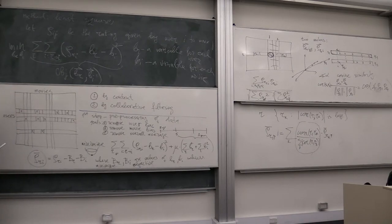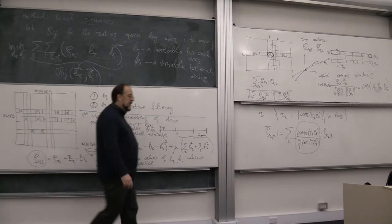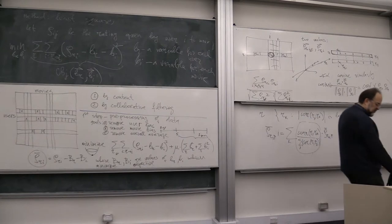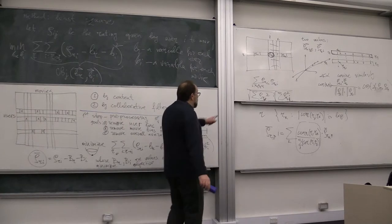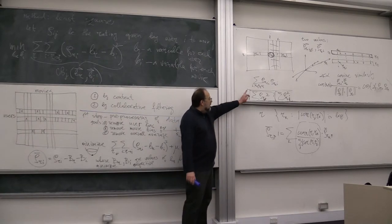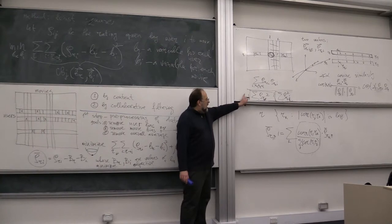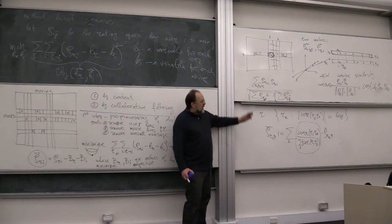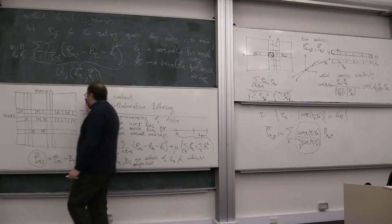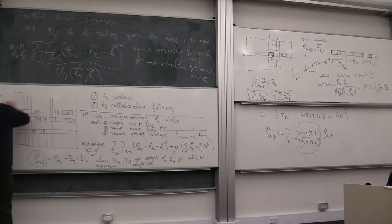So, that's first type of recommender systems. There is another important kind, which does not rely on this notion of the angle between users or movies. So, this angle is, in a sense, distance between vectors, right? Quote and quote distance.